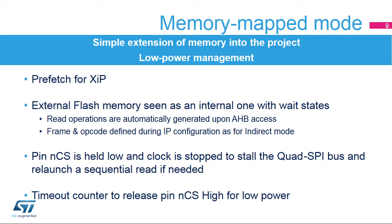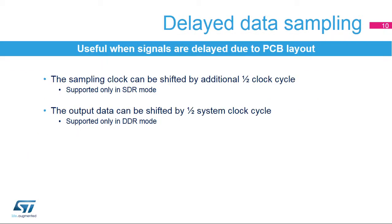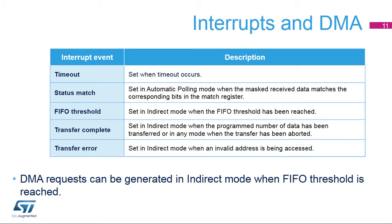This mode also supports SIOO mode, or Send Instruction Only Once, supported by certain flash memories, which allows the controller to send an instruction only once and to remove the instruction phase for following accesses. Delayed data sampling allows users to compensate for the delay of signals due to constraints on the PCB layout optimization. It allows applications to shift the data sampling time by an additional one-half clock cycle when operating in SDR mode. In DDR mode, the output data can be shifted by one-half system clock cycle to relax hold constraints.